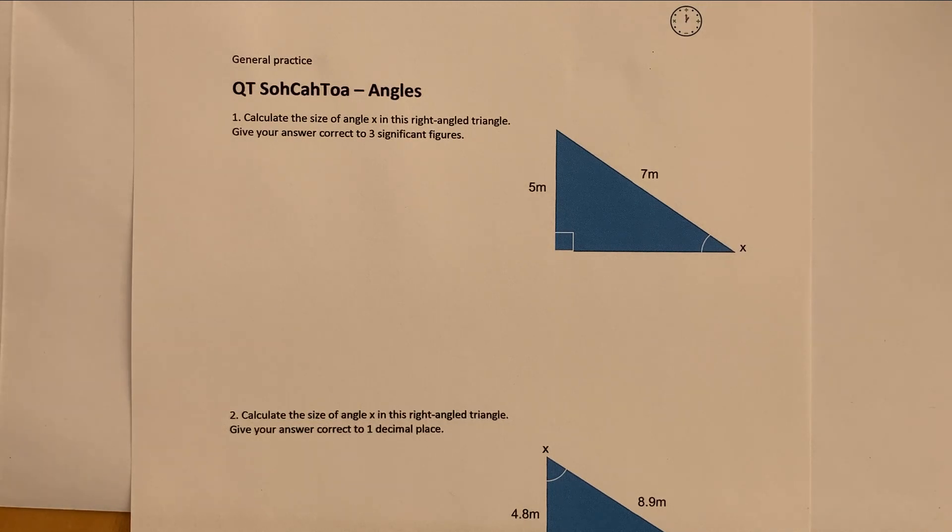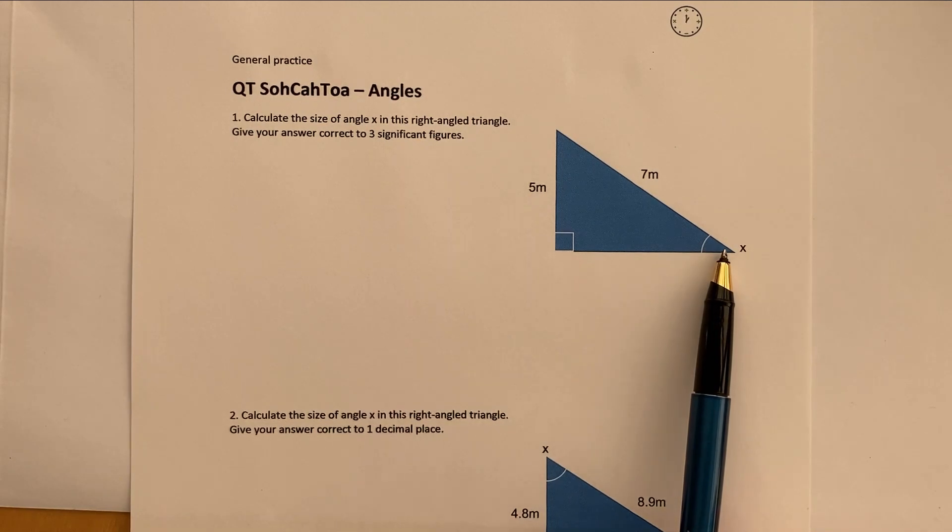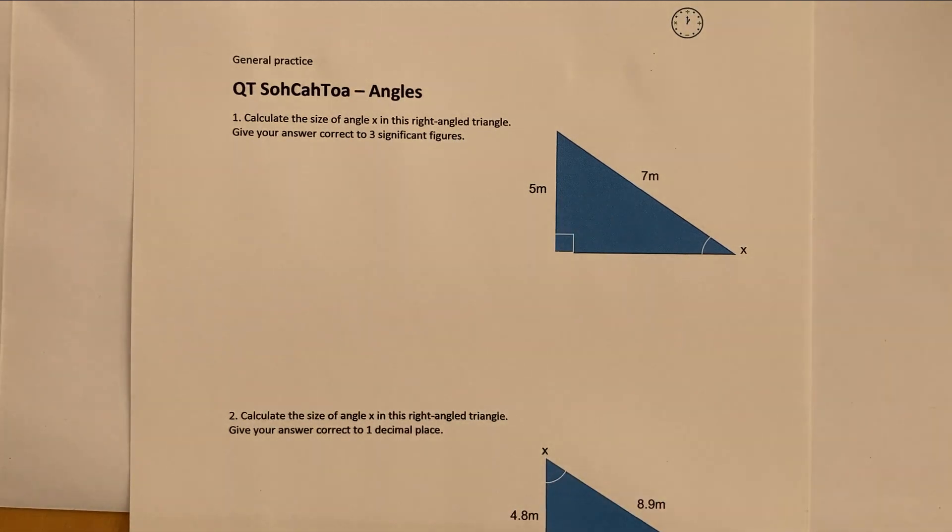What we've got here is we're told that angle x, which is this one over here, is in a right angle triangle and this dimension is 5 metres and this dimension is 7 metres.